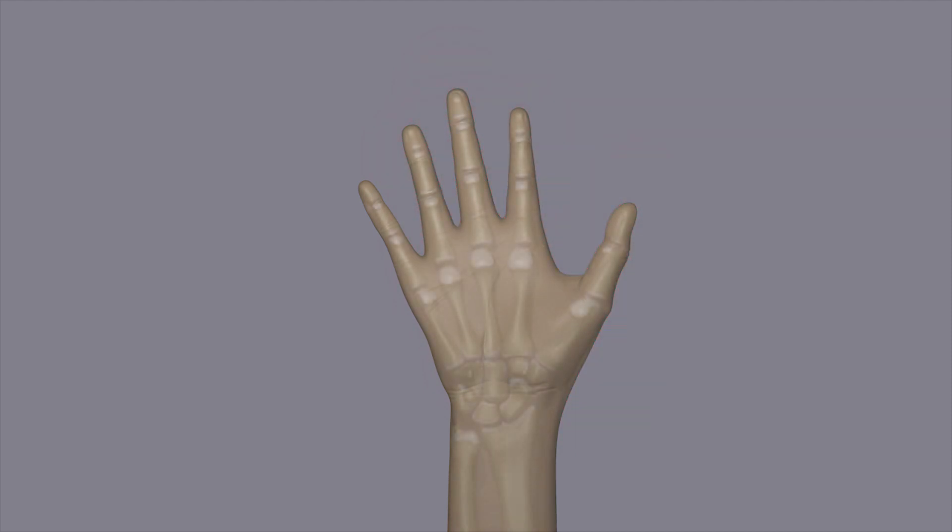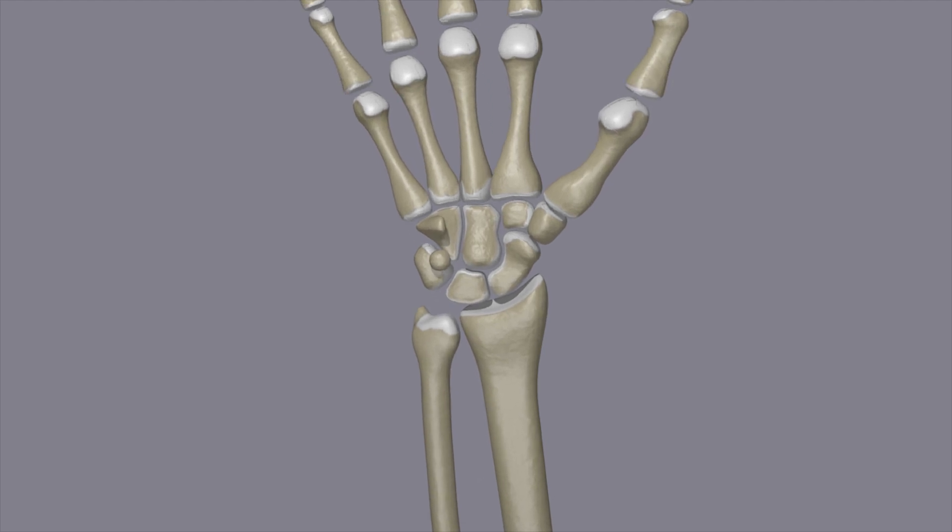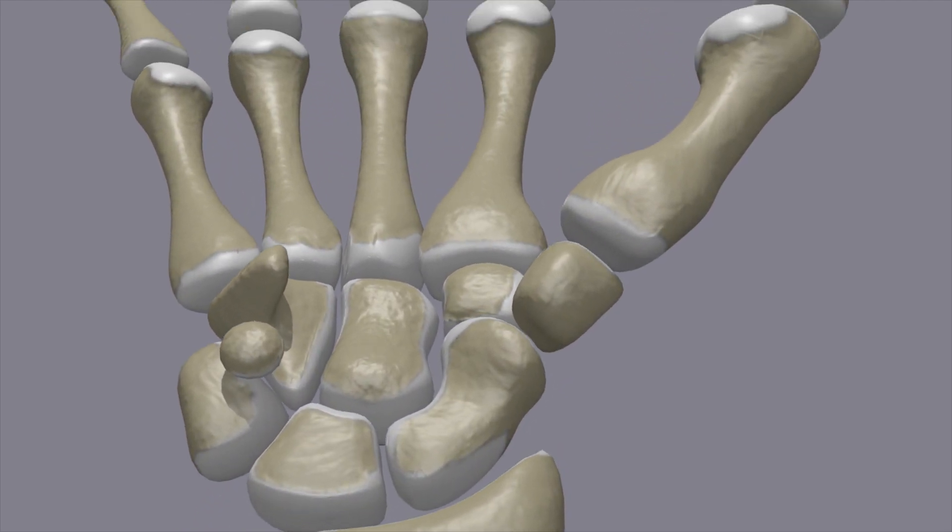The carpals are the small bones in the wrist. They form a tunnel through which some of the flexor tendons pass.